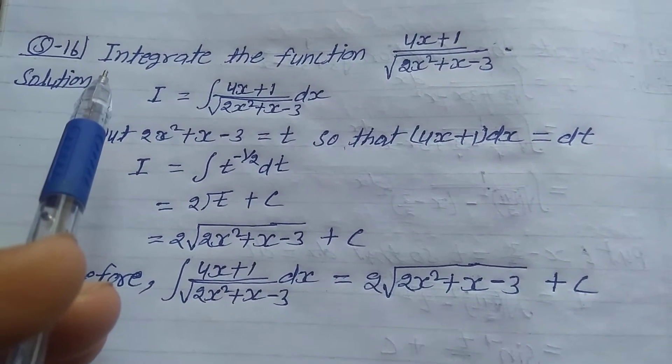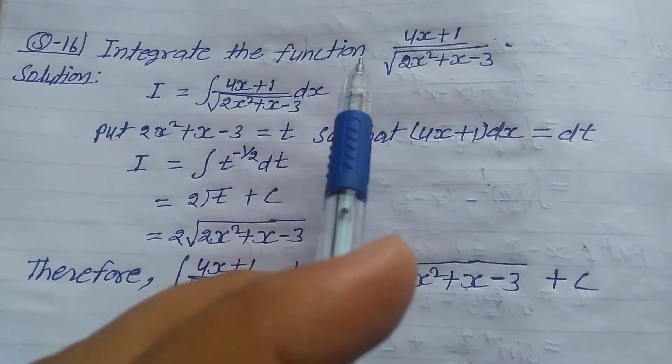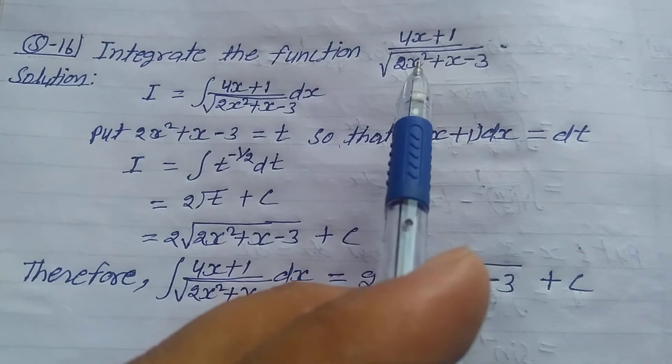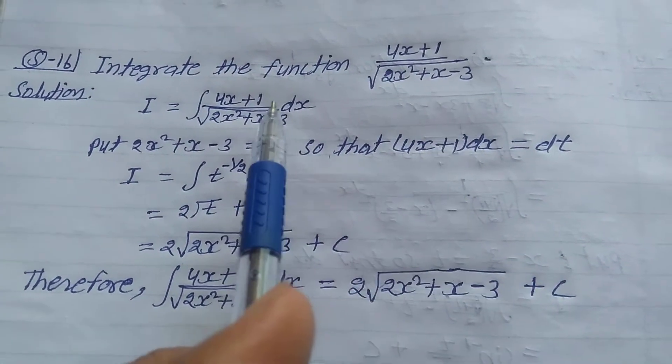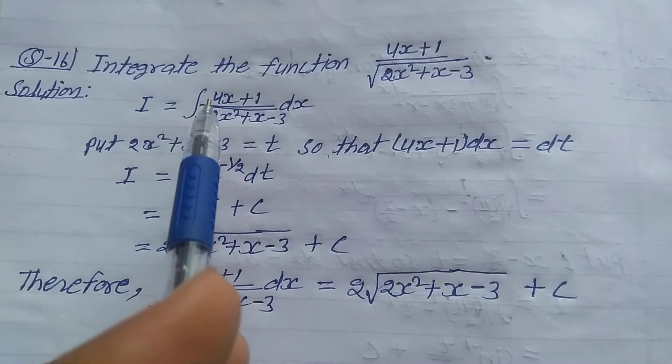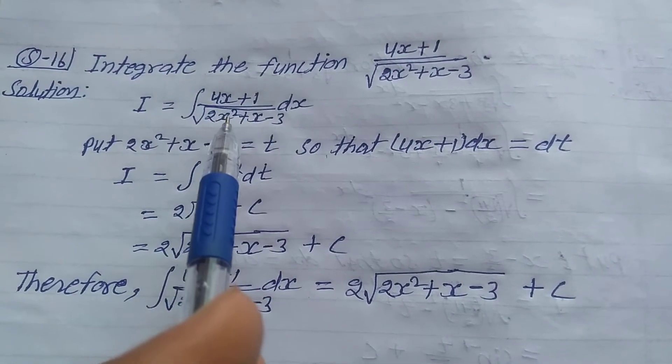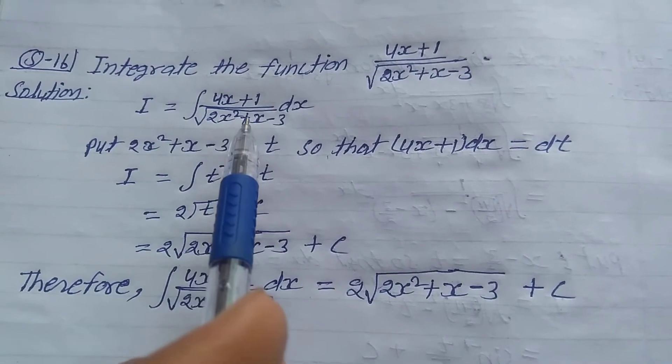Explanation number 16, Exercise 7.4, Class 12th. Integrate the function (4x + 1) upon root of (2x² + x - 3). Solution: Take I equals integration of (4x + 1) upon root of (2x² + x - 3) dx.